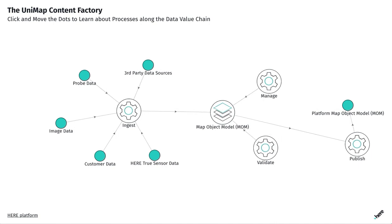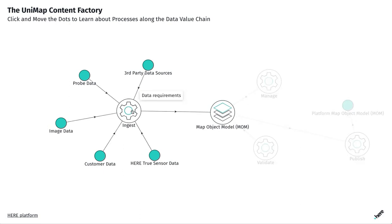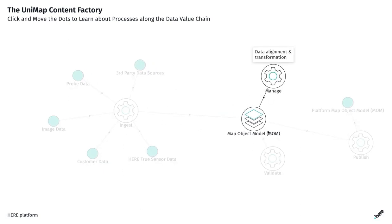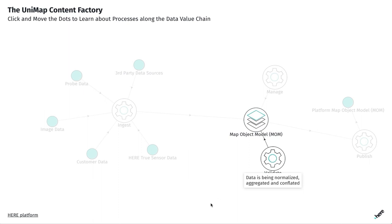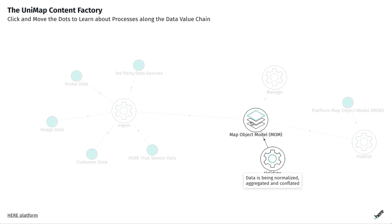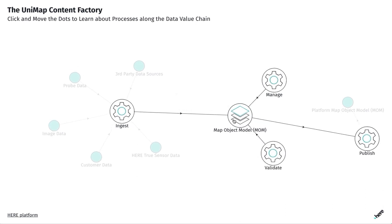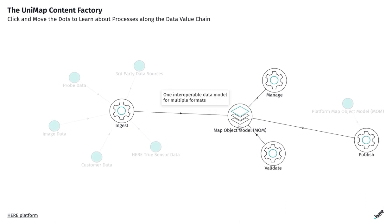Second, Unimap uses three dedicated services — feature extraction, feature alignment, and feature conflation — to normalize raw data from multiple sources into a unified geo-referenced feed of map updates. It follows the principles of a service-oriented architecture, meaning all components are streamlined services that eliminate the need for manual interactions.